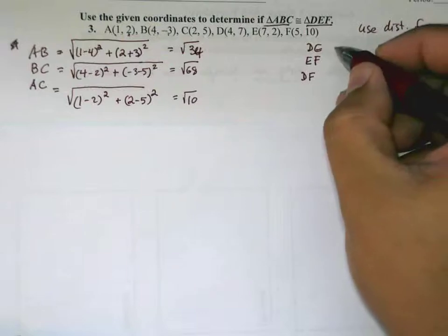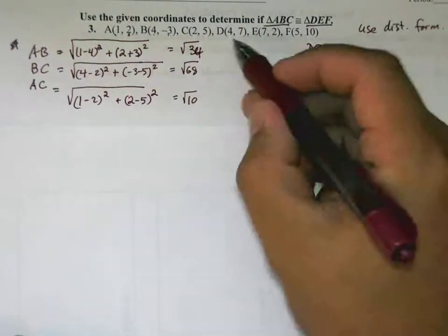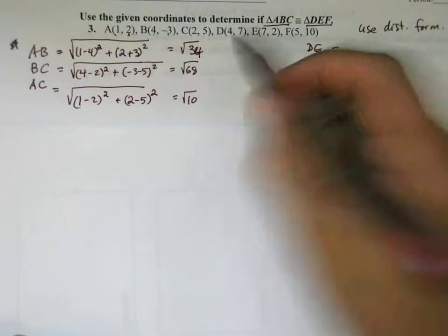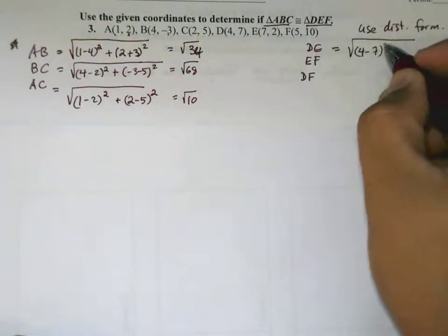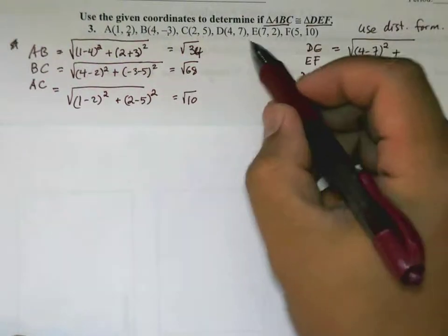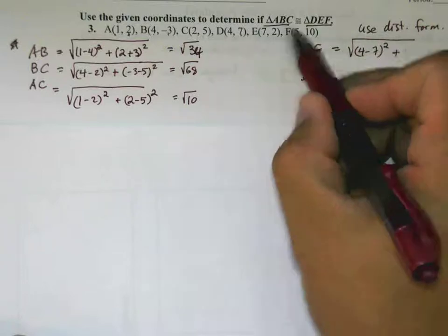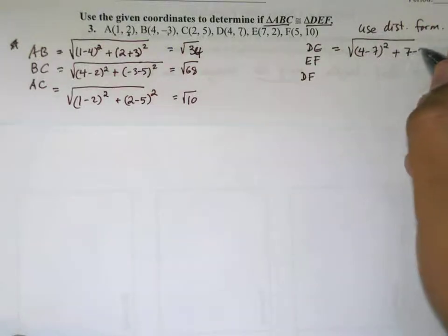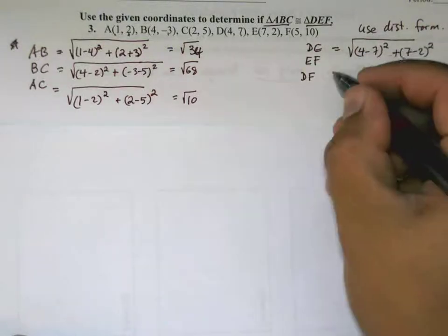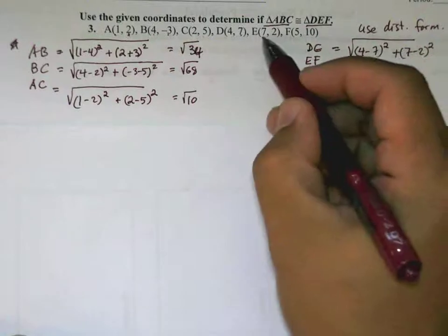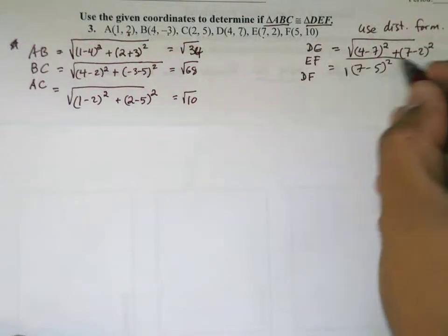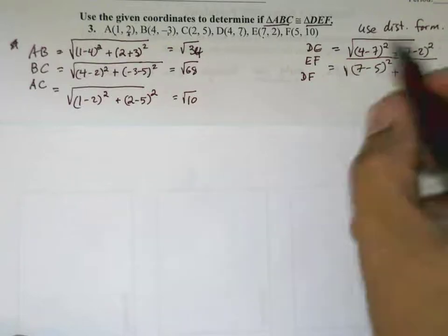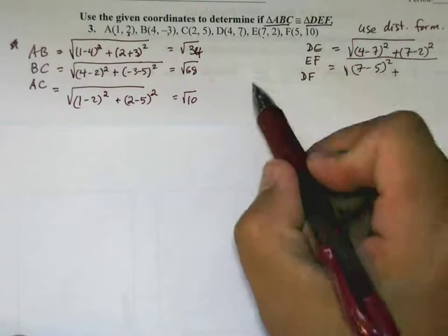I'm going to do the same thing with the other triangle. From D to E is √[(4-7)² + (7-2)²]. E to F is √[(7-5)² + (2-10)²].